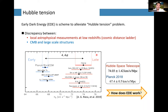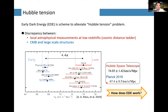The Hubble tension is a discrepancy between local measurements of the Hubble parameter at the present time, and the CMB plus large-scale structure — early universe — measurements of the Hubble parameter. Two different types of measurements of the same quantity give different results. The discrepancy is about 4.4 sigma, but listening to updates, it's now more than 5 sigma, some say 6 sigma. It's a serious problem in cosmology.